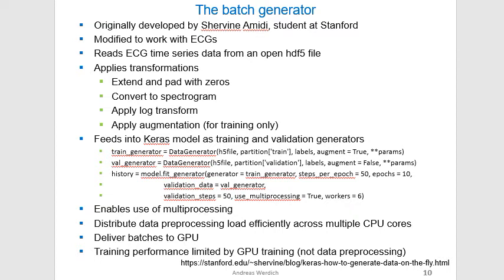I used a batch generator modified from one originally developed by Sherwin Amidi, a student at Stanford, adapting it to work with ECGs. The batch generator reads time series data from an open HDF5 file and applies transformations such as extending the time series and padding with zeros, since we need to feed consistent-size images to the model. It performs the conversion to spectrograms, applies the log transform, and applies data augmentation for training. The data are then fed into a Keras model for training and validation. The batch generator also enables multiprocessing, which Keras supports — distributing data preprocessing load efficiently across multiple CPU cores and delivering batches to the GPU so that training performance is limited by GPU computation, not data preprocessing.